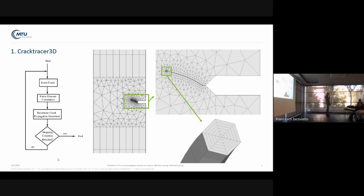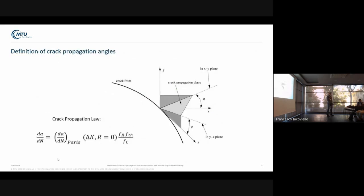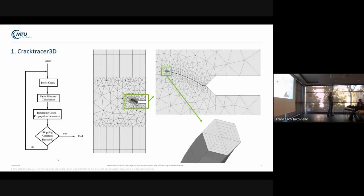K1, K2, K3. From this, the equivalent K factor is determined, the crack propagation direction is determined, and using the standard crack propagation law, the crack propagation increment is calculated.